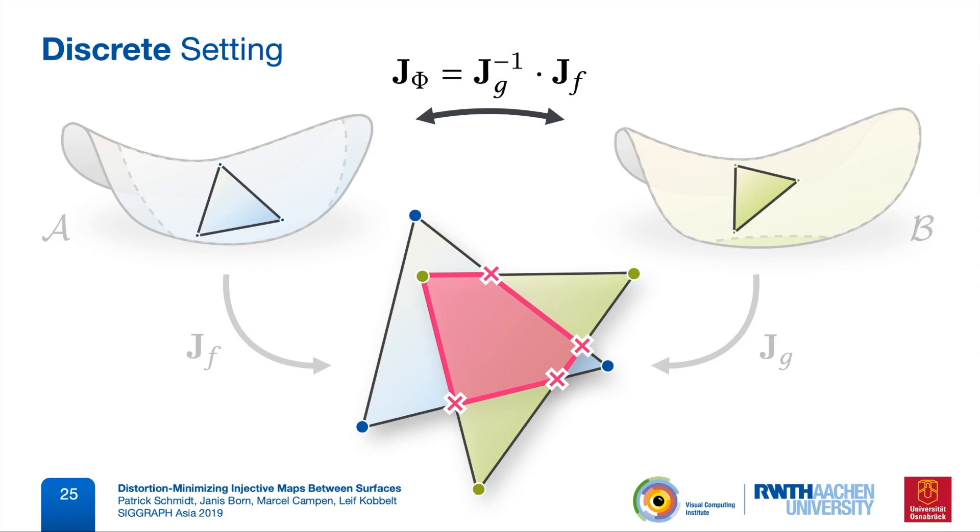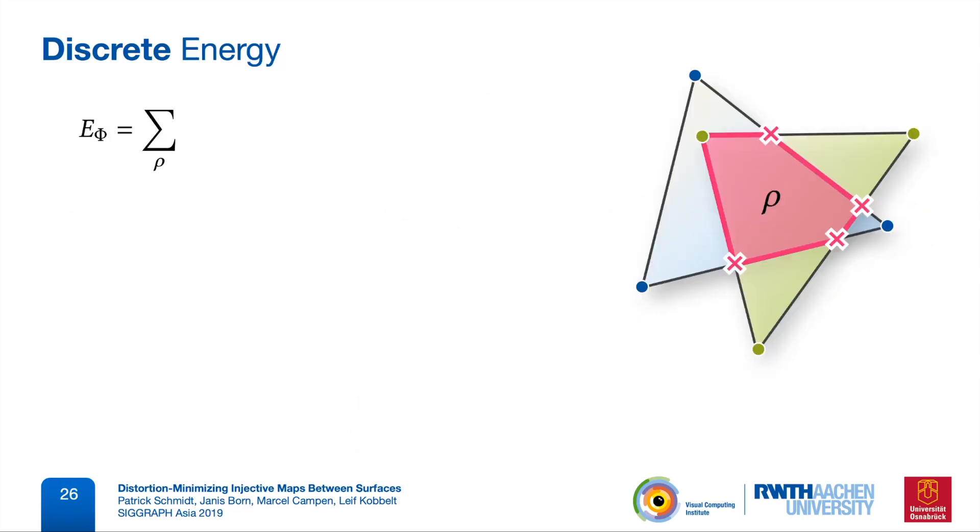And then we can write down the same energy again, but this time as a sum over these polygons. So we again have the stretch of the map in both directions, but now for a single affine piece of the map, we write it again in terms of both individual parameterization functions. Each piece of the map, each overlay polygon, is weighted by its area, but since we're not integrating over the intermediate domain, but over the input surfaces, we have to lift this area, once to mesh A and once to mesh B.